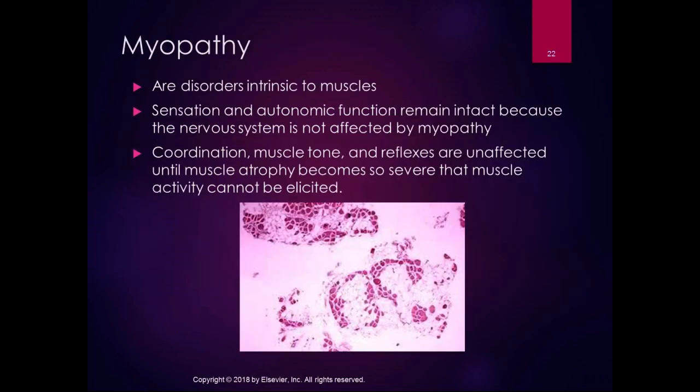Myopathies are disorders intrinsic to the muscles themselves, unrelated to the nerve. Sensation and autonomic function remain intact because the nervous system is not affected. In muscular dystrophy, coordination, muscle tone, and reflexes are unaffected until muscle atrophy becomes so severe that muscle activity can't be elicited. A cross-section of a gastrocnemius muscle in someone with Duchenne muscular dystrophy shows muscle fibers replaced by adipose tissue, explaining why the muscle simply doesn't work.